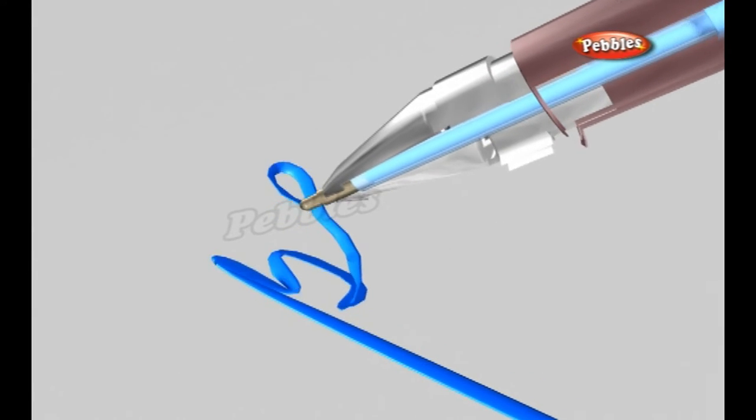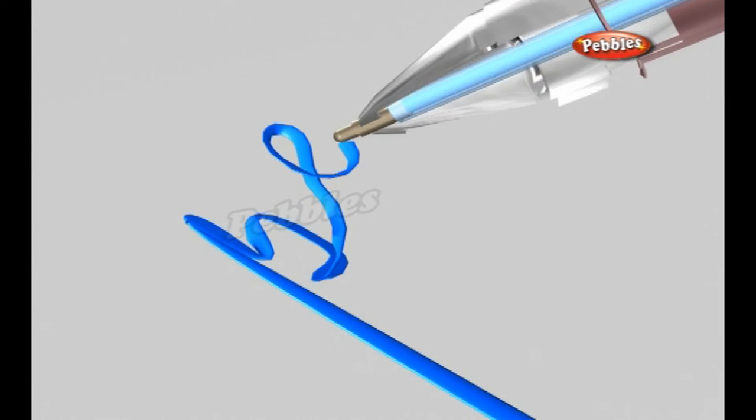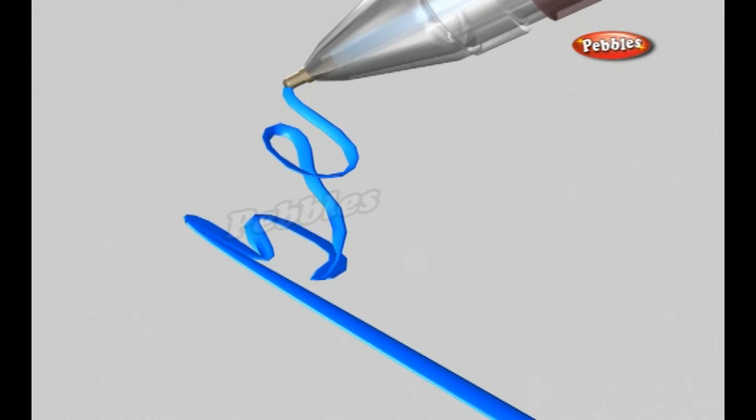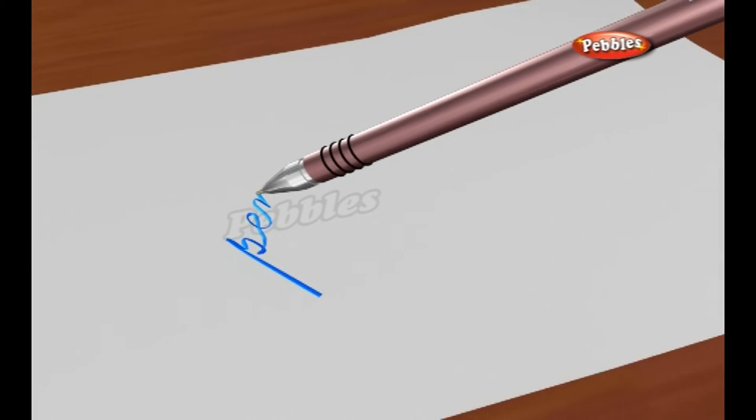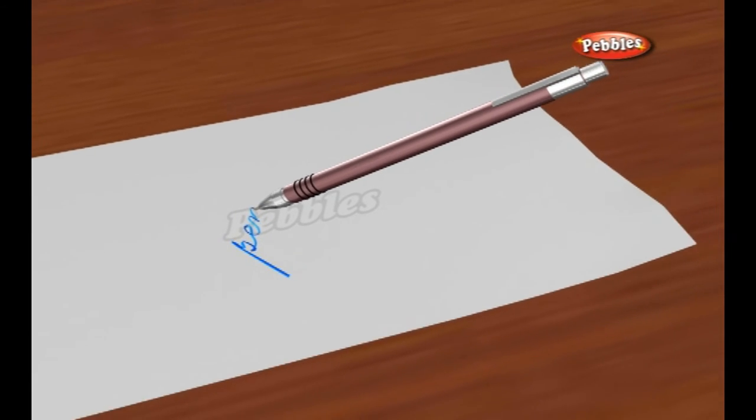It's this rolling mechanism that allows the ink to flow onto the top of the ball and roll onto the paper you are writing on while at the same time sealing the ink from the air so it does not dry in the reservoir.